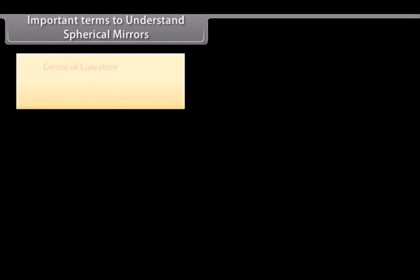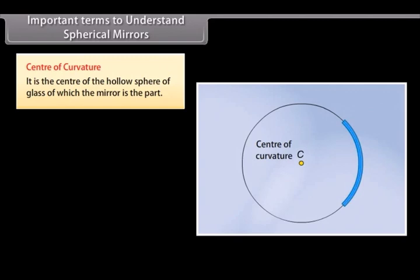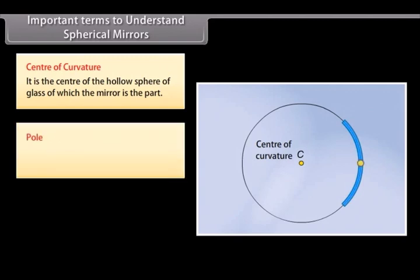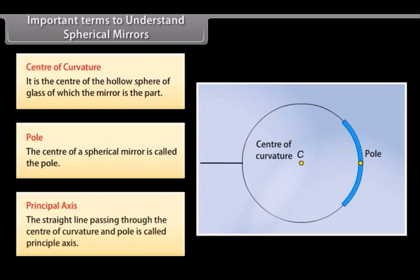Important terms to understand spherical mirrors. Center of curvature: it is the center of the hollow sphere of glass of which the mirror is a part. Pole: the center of a spherical mirror is called the pole. Principal axis: the straight line passing through the center of curvature and pole is called the principal axis.